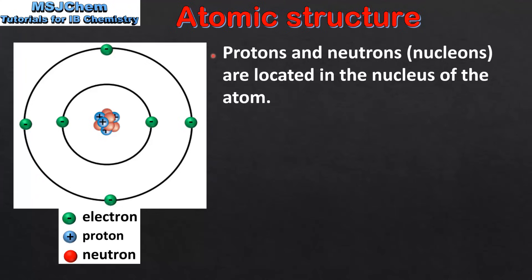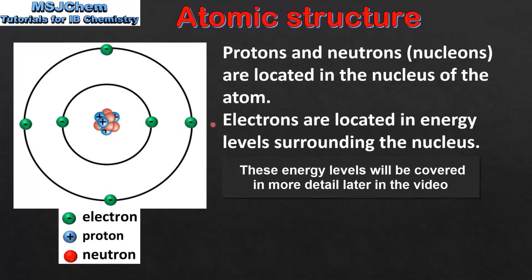Protons and neutrons, which are known as nucleons, are located in the nucleus of the atom. On the left we have a simple model of an atom. The nucleus contains protons and neutrons. Electrons are located in energy levels surrounding the nucleus, as we can see in this model.